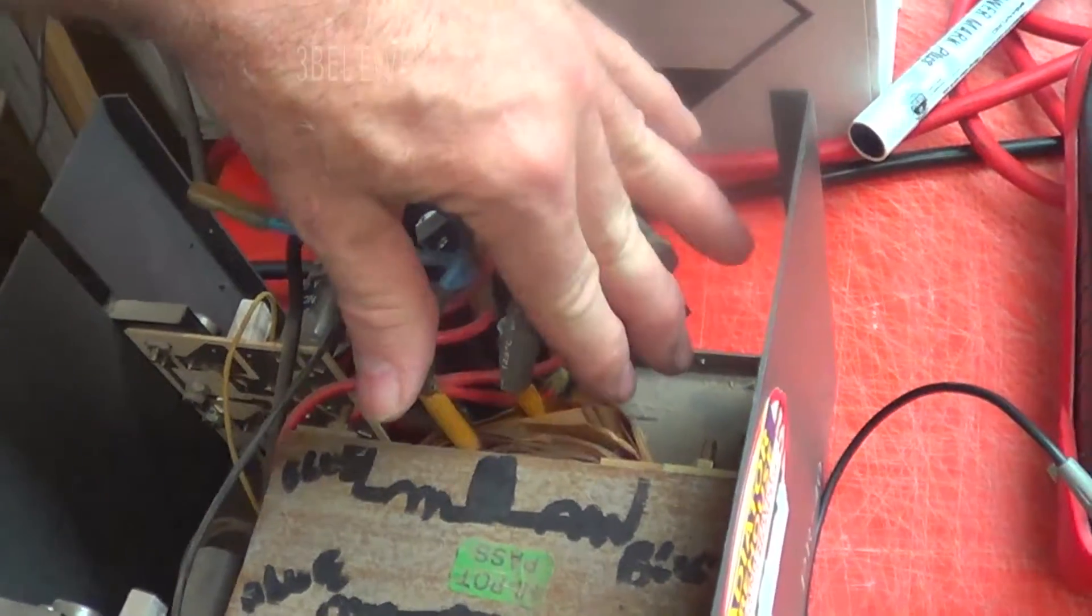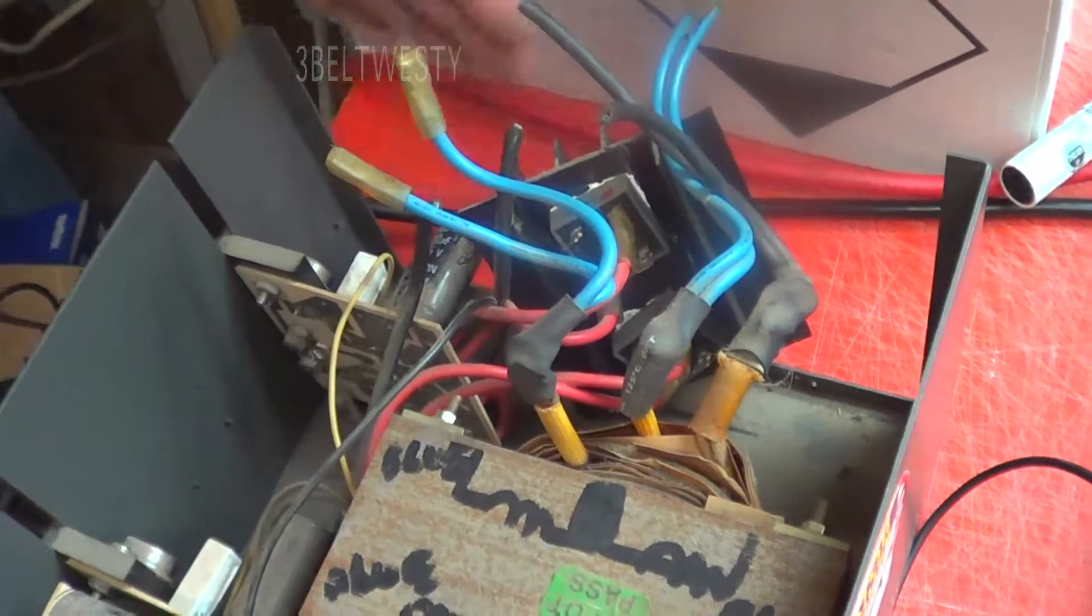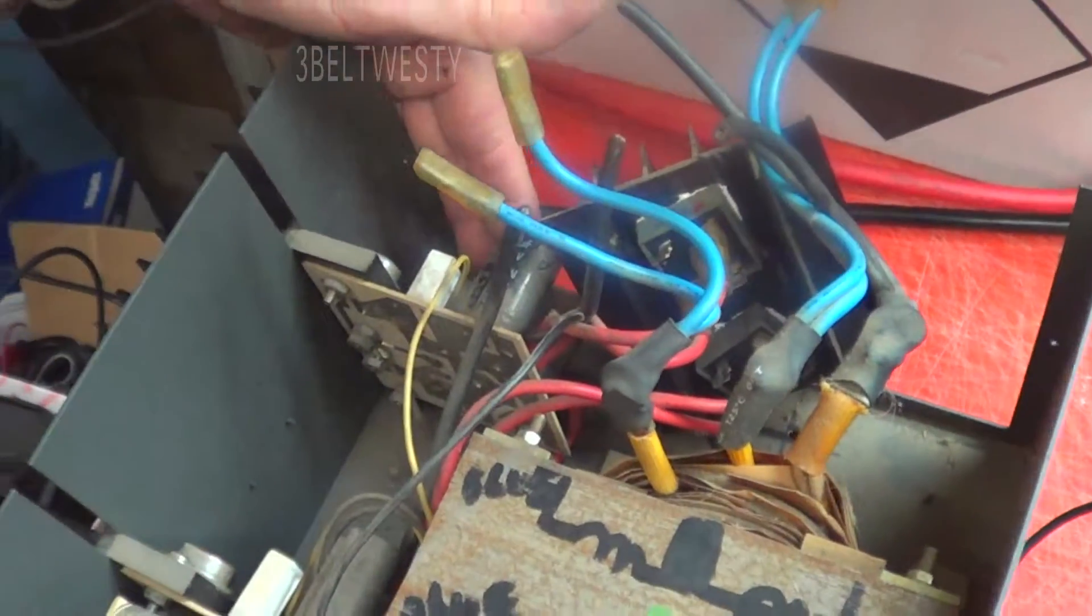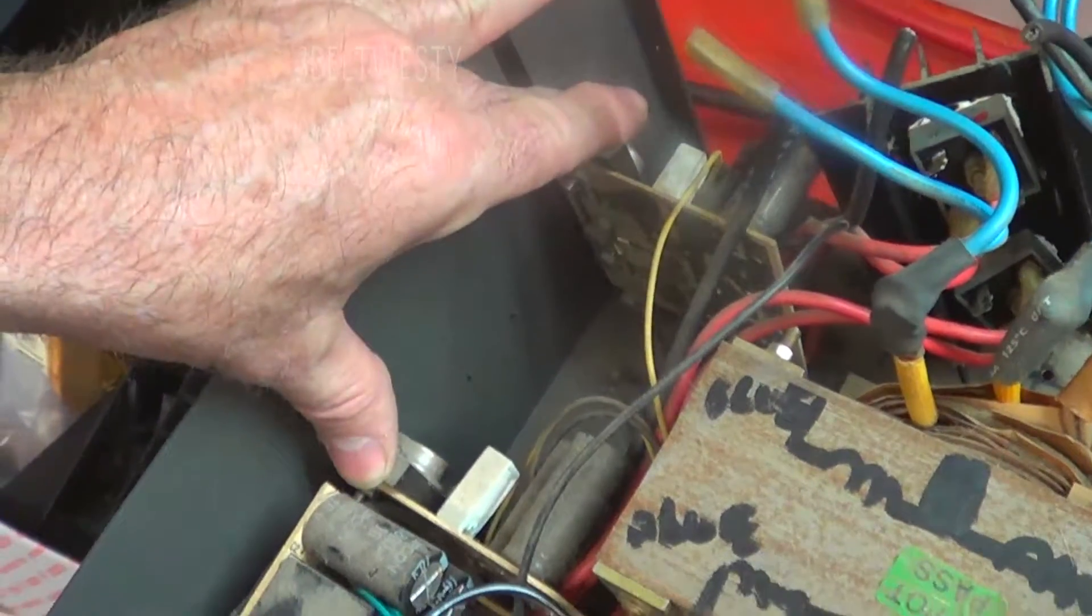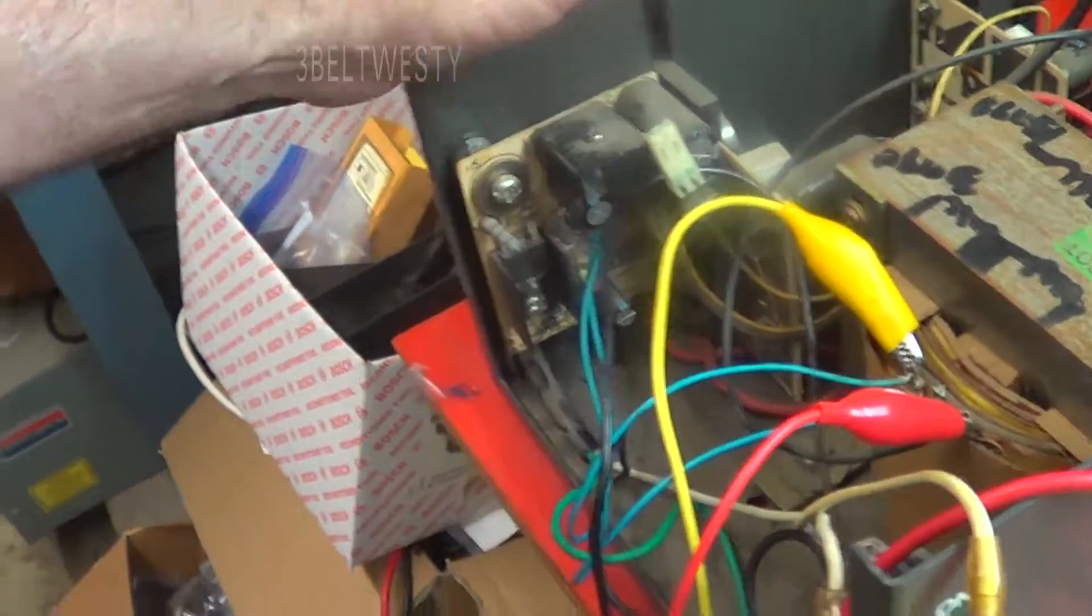Again, this is the high output section. The high current section would be a better thing. Goes through the bridges. Rectified. These are the regulators. Linear control. We've got four transistors. Some filter caps.